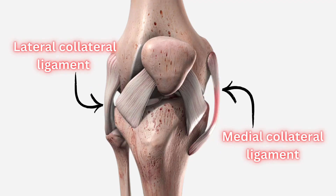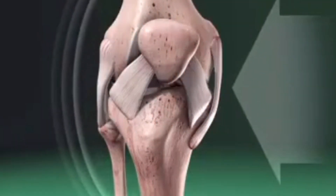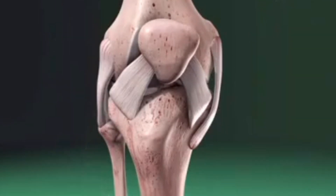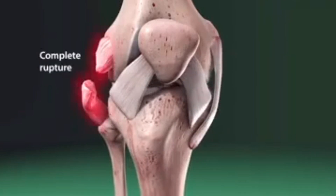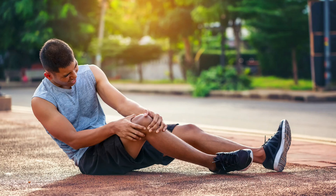The collateral ligaments of the knee. The knee has two major collateral ligaments: the lateral and medial collateral ligaments. Their primary function is to stabilize the knee and prevent excessive sideways movement. An LCL injury typically occurs due to a direct blow to the inside of the knee, called varus stress, placing stress on the outer ligament. This results in lateral or posterolateral knee pain, swelling, and mechanical symptoms such as locking and giving out.